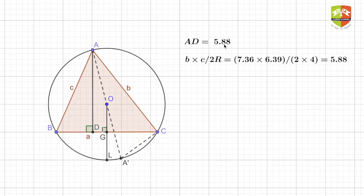So AD, as you can see here, I have shown the value also. In this case it is 5.88. b is the side opposite to angle B here. This is angle B, this is side c. Hence AD will be equal to b times c divided by twice of R. R is the circumradius.